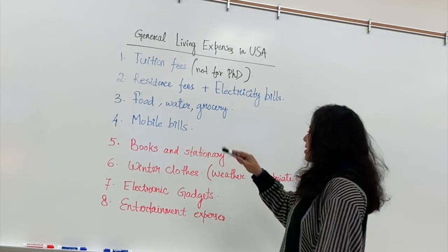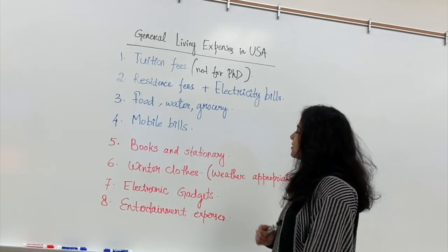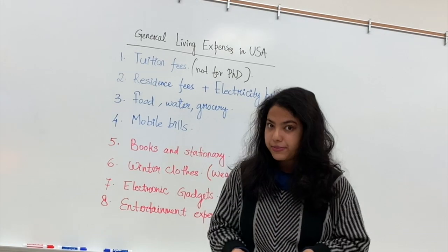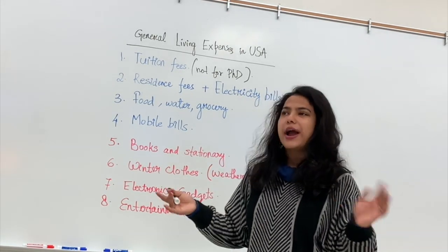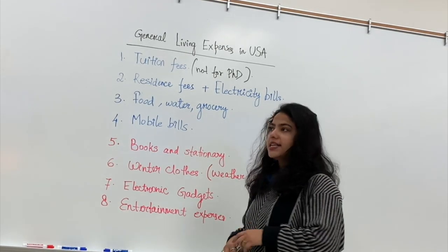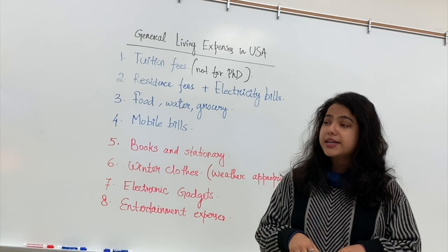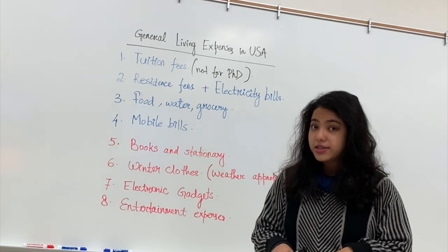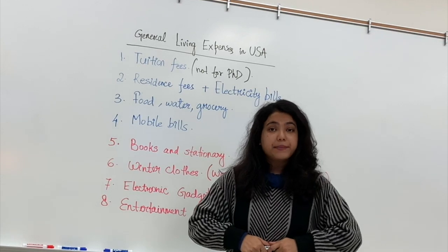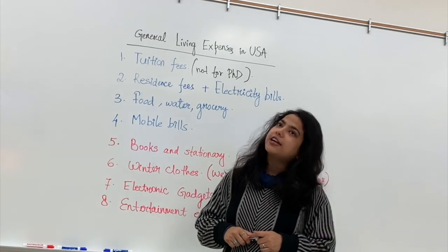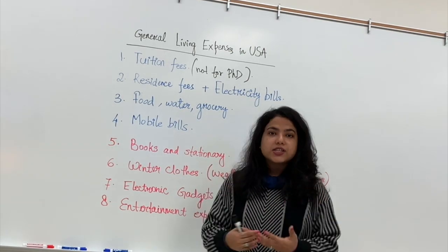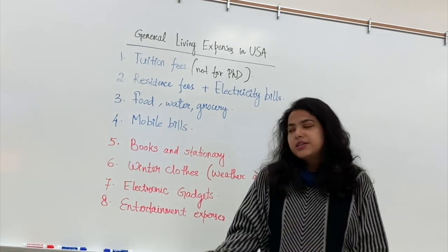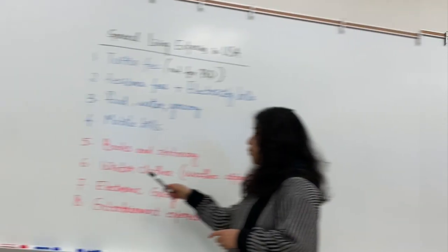Now moving to the less critical expenses. First is books and stationery. Your university campus has a large library with almost all the books you require for your studies. There are also options to download PDFs for free. If a book isn't available in the library or you prefer a physical copy, you can buy it from Amazon. Stationery costs are minimal overall.